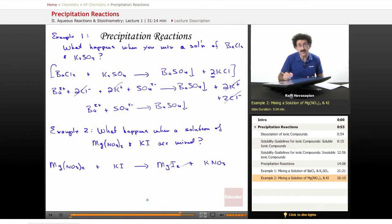Now I want to balance this. That's the first thing I do once I come up with the molecular formula by switching partners. There's one magnesium on each side. There's two nitrates on the left and one on the right, so I put a 2, which gives me 2 potassium.